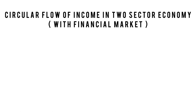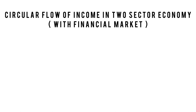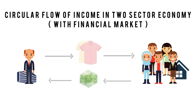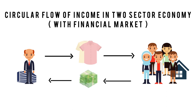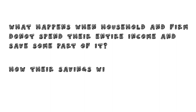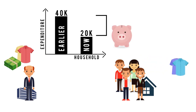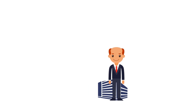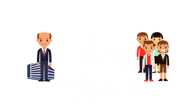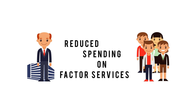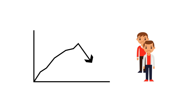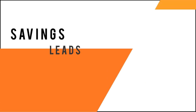In the basic circular flow we assumed that households spent their entire income and firms paid out all earnings. In reality, households and firms save part of their income. When households save, their expenditure on goods and services reduces, meaning firms receive less income, leading to reduced spending and laying off of fewer workers. This leads to a fall in total household income. Thus, saving reduces the flow of money to business firms and causes a fall in the economy's total income. This withdrawal of money is called leakages.